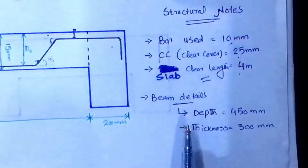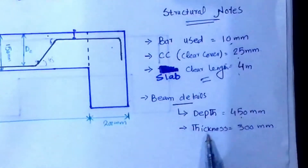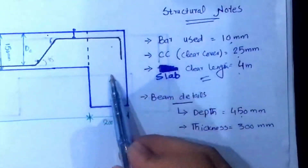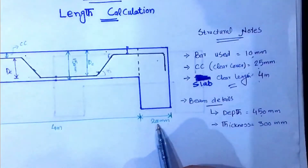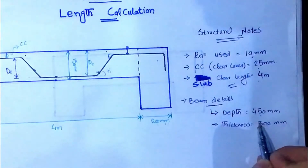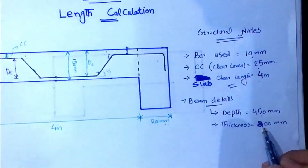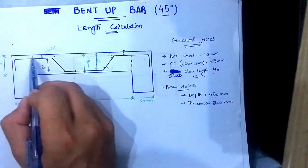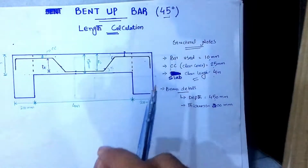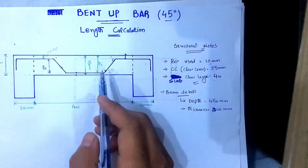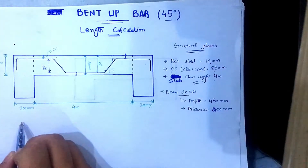The beam details are: depth is 450 millimeter, and the thickness of this beam is 200 millimeter. Now we will calculate the length of this bar. You need to understand each and every step of this calculation, because this will help you in bar bending schedule calculation.